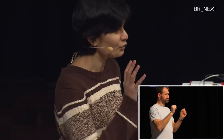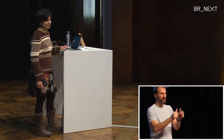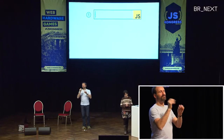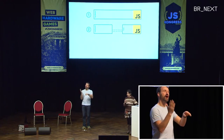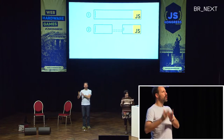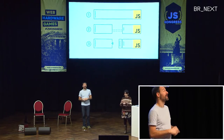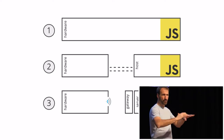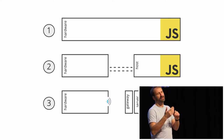I'll be sharing with you three specific models of how JavaScript can interact with the hardware world. The first model is JavaScript running on the hardware. The second model is JavaScript running on a host machine — for example, your laptop — and it is tightly coupled or tethered to the hardware. The third model is JavaScript running on the server, communicating with hardware that has wireless capabilities through a gateway using internet protocol.